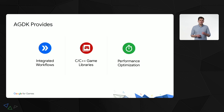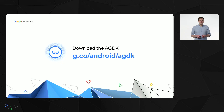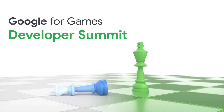We've covered a lot today. To recap, the AGDK includes integrated workflows like our updated Visual Studio extension, a suite of C and C++ development libraries like our new Memory Advice API, and a focus on performance optimization to improve your game's performance both pre- and post-launch, such as our new updated GPU frame profiler. That's just a taste of what's on offer — it's got something for every game developer. Make sure you stay tuned for our other videos, and you can download and try the AGDK now at g.co/android/agdk. Thank you for your time, and happy game development.